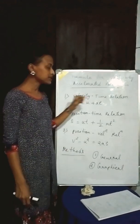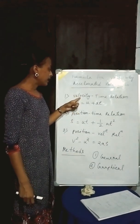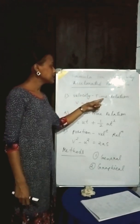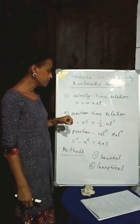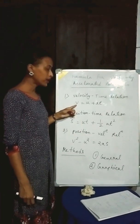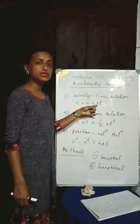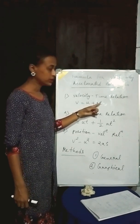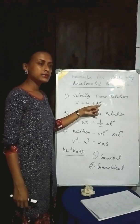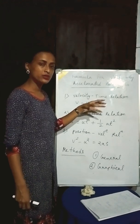The first formula is V equals U plus AT, and it is known as velocity-time relation. V represents final velocity, U represents initial velocity, A represents acceleration during the motion, and T represents time taken to cover that whole motion.